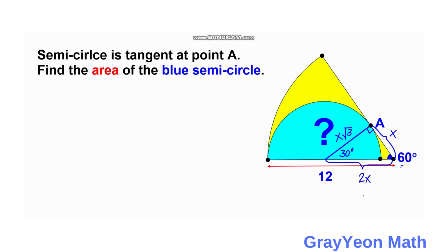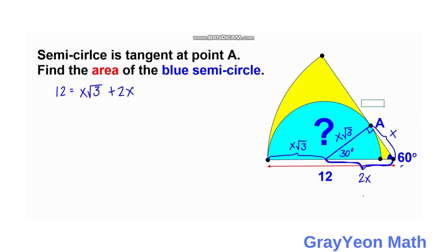Next, we consider the given radius of the sector, which is 12. The total length along the sector's side equals x√3 plus 2x. So x√3 plus 2x equals 12.